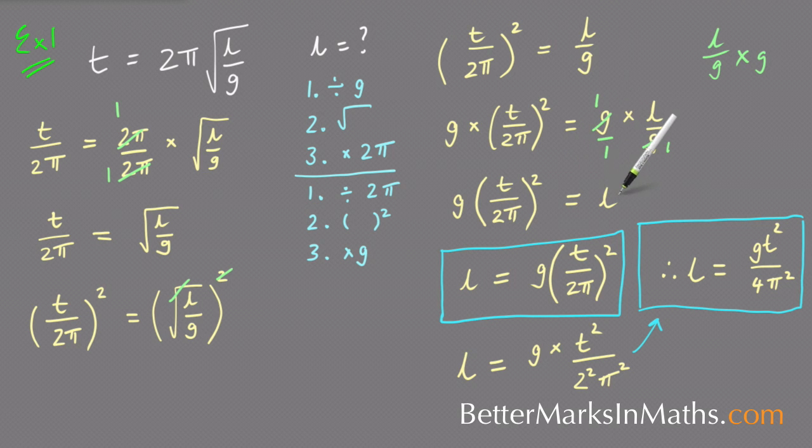And so this is the next step. So G bracket T on 2π all squared equals L. And swapping it around so that L is now the subject, it becomes L equals G bracket T on 2π all squared. Now if you had to expand out any brackets, if that was what your teacher wanted you to do, you've just got to make sure you square everything in this bracket. So in the next step, I've done that. I've squared the T, I've squared the 2, and I've squared the π.